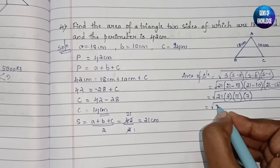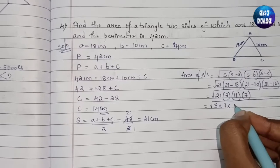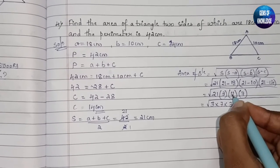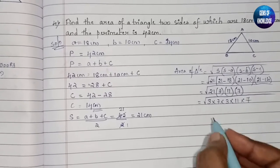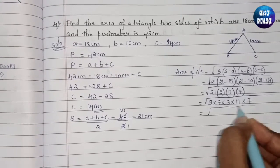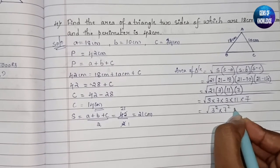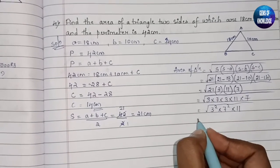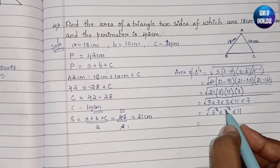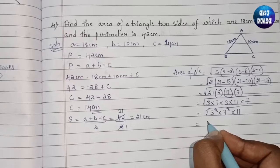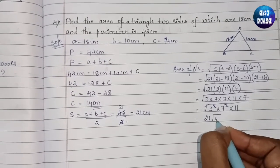We can write 21 as 3 × 7. So inside the root we have 3 × 7 × 3 × 11 × 7. The pairs of 3 and 7 cancel with the square root, giving 3 × 7 × √11, which equals 21√11 centimeter square.